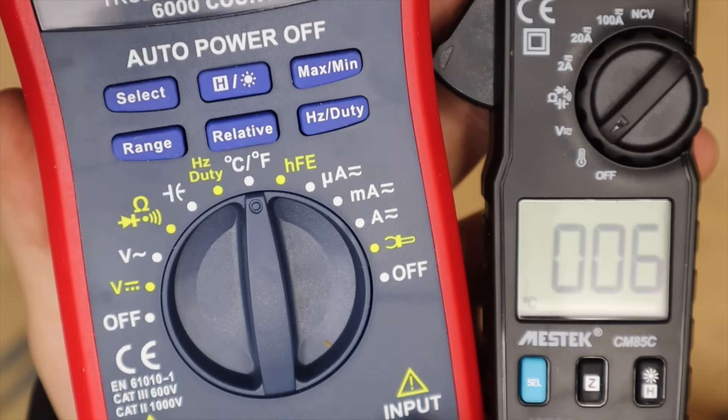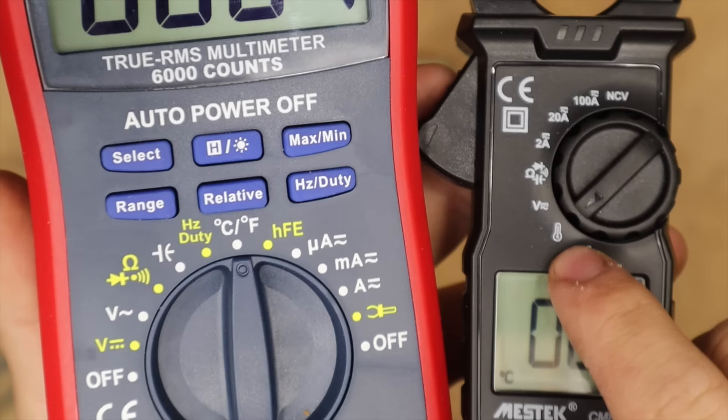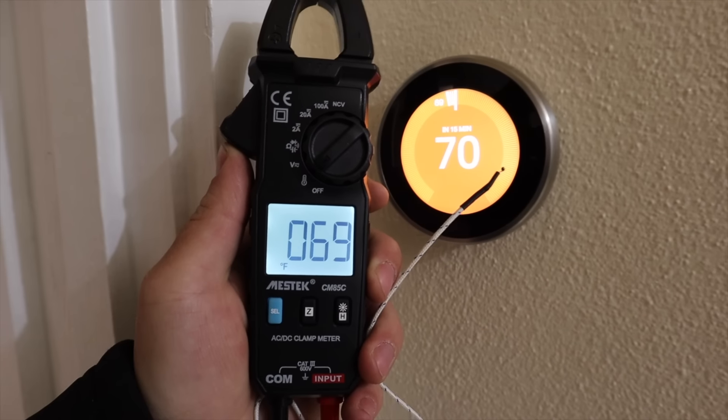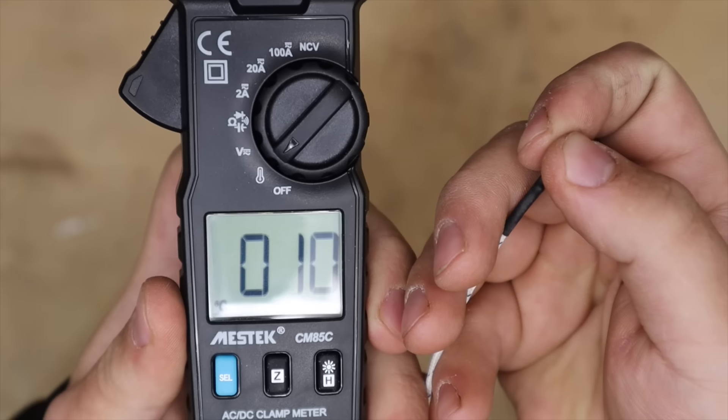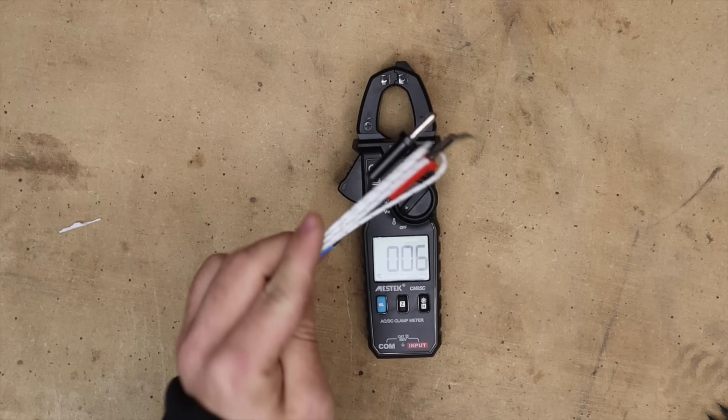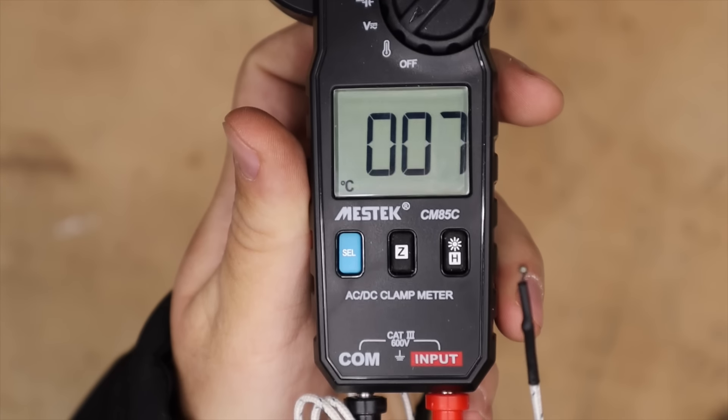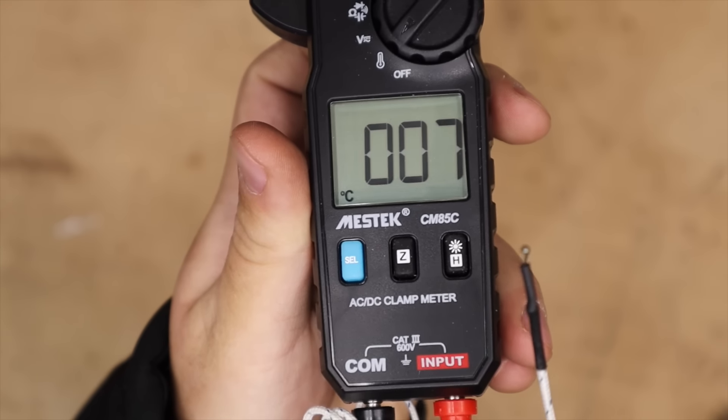Another common feature is the temperature probe. This will either be represented by celsius or fahrenheit or a temperature symbol like this. This one's pretty simple and straightforward. It tells us either surface or ambient temperature. Meters with this feature will usually come with a separate probe that we have to connect to our meter and this should give us temperature. This probe should not be wet.